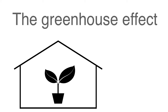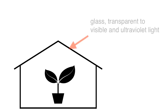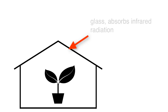The greenhouse effect is a phenomenon named after where it often occurs: greenhouses. As you probably know, greenhouses are buildings designed to grow plants. They typically have roofs or walls of glass. Glass, which is mostly made of a compound called silicon dioxide, is transparent to visible and ultraviolet light. However, it's not transparent to infrared light, which is another name for what we call heat.